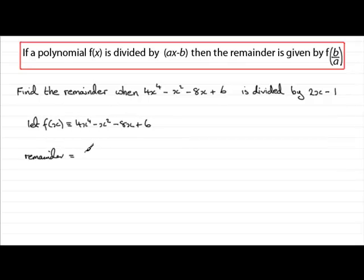Another way of getting that value, by the way, a half, is all you've got to do is just put this value equal to 0. If you put 2x minus 1 equal to 0, you'd get 2x equals 1, and x would equal a half. And that's the value you put in.